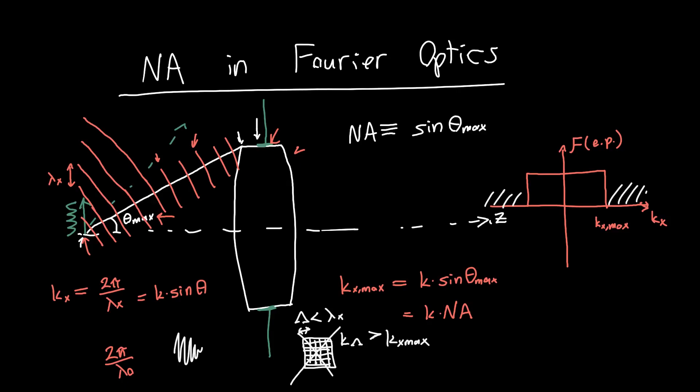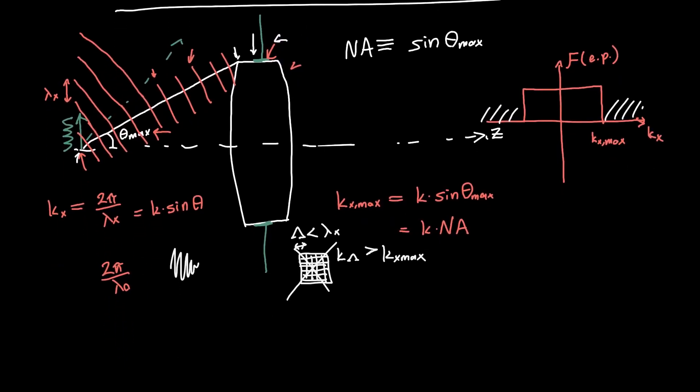So if you were to define the resolution of an optical system, you might want to define it as the smallest distance, this smallest distance λx, that you can reliably transmit a frequency of. So let's define the resolution of our system as λx minimum, so the absolute minimum wavelength or equivalently maximum spatial frequency we can transmit.